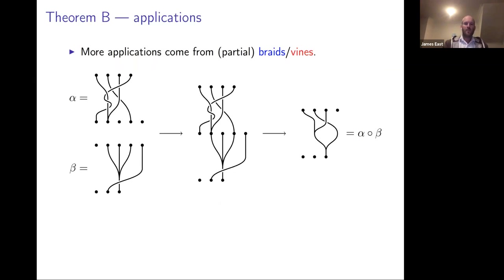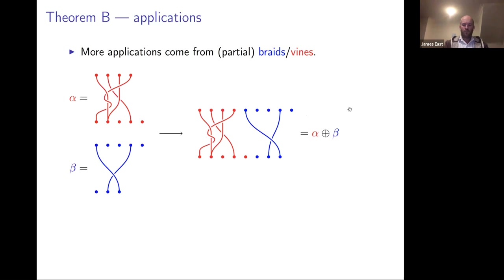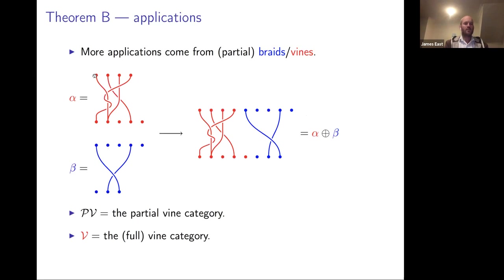Other examples include the category O of all order-preserving (isotone) transformations — a planar version of T where we drop the transposition generator x since that's not order-preserving — leaving just v and upside-down U with a very simple list of relations. For order-preserving partial transformations and partial bijections we get different combinations of generators and relations. We can also handle categories of vines — like braids except strings can come down and join up, though once joined they can't come apart — giving the partial vine category, the full vine category, and the partial braid category.